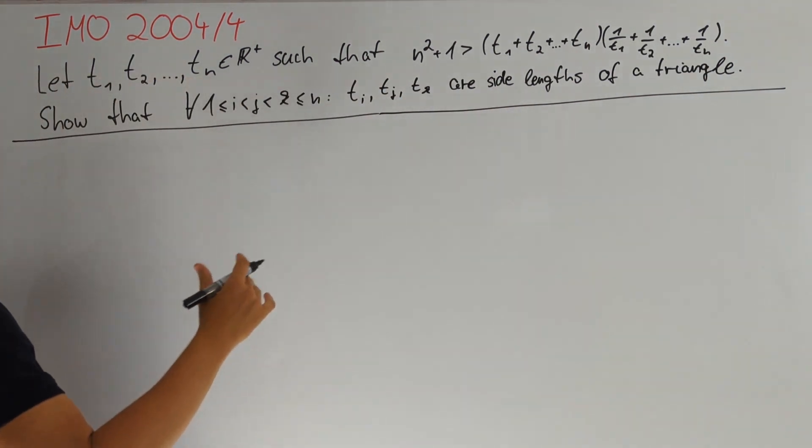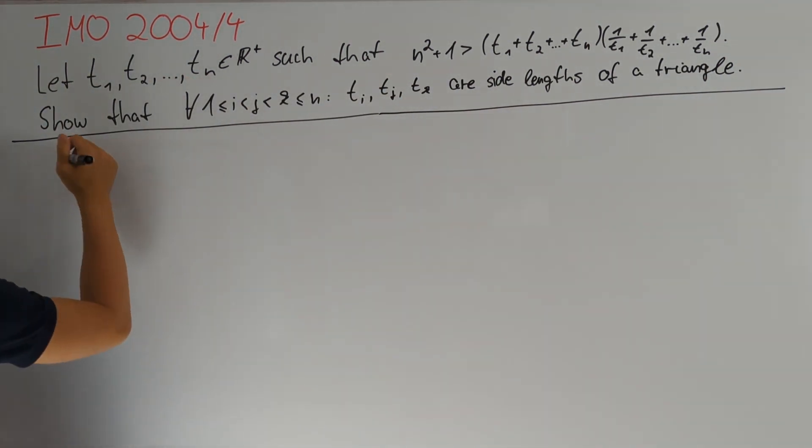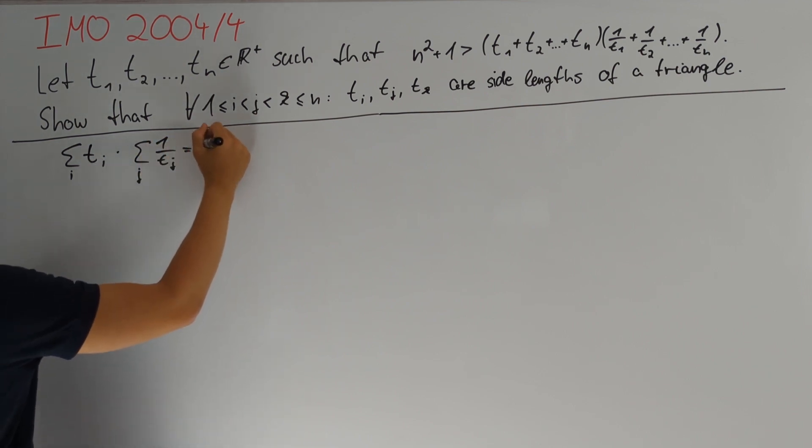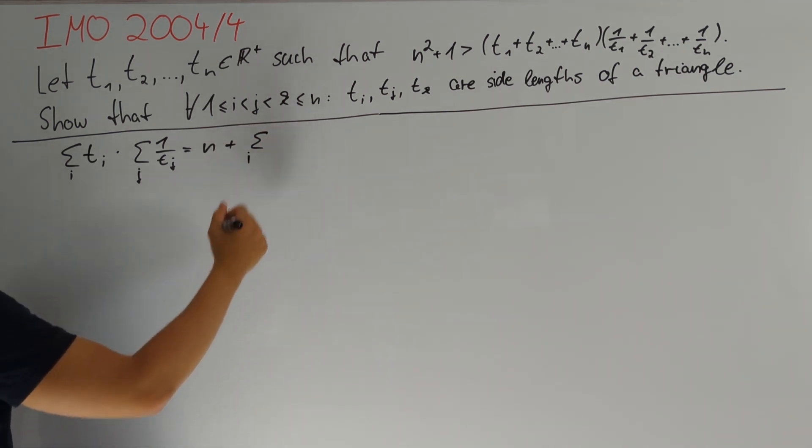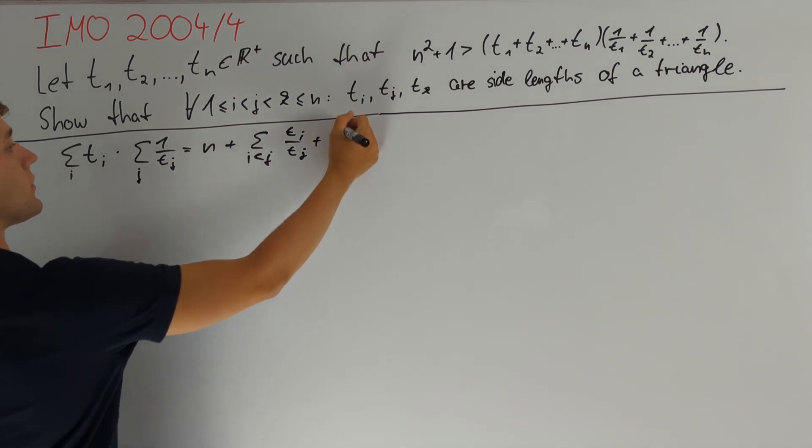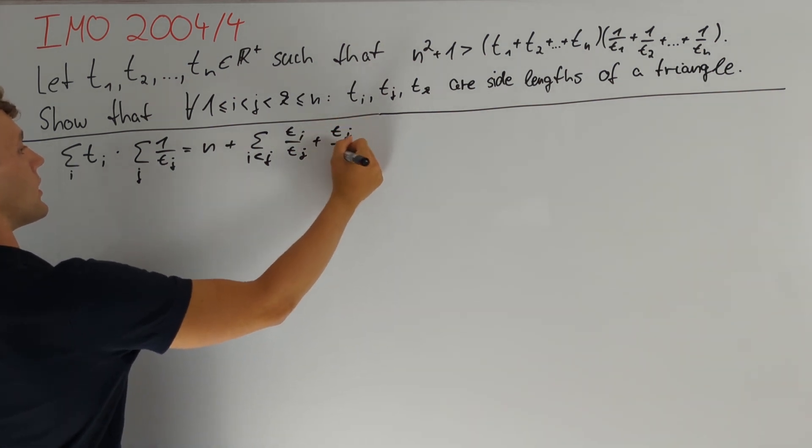Another proof that uses more local structure: we have the sum over all i of tᵢ times the sum over all j of 1/tⱼ. For all tᵢ times 1/tᵢ we get n in total. Then we add the sum of all i distinct to j, or i < j, of tᵢ/tⱼ plus tⱼ/tᵢ.